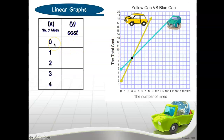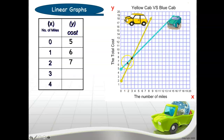At zero value, let's take a look at the blue cab. At zero, we are at five, so I'm going to put five over there. When X is one, go up and your Y is at six. Now let's move on to when X is two — I go up and I see that it's seven. At four, I go up and it's at eight.